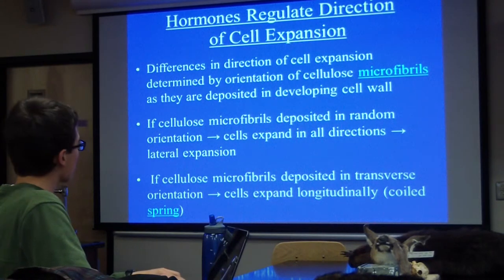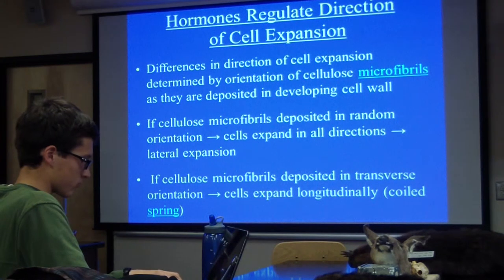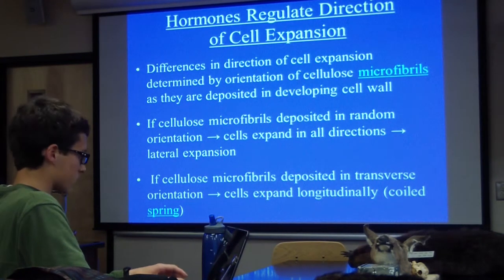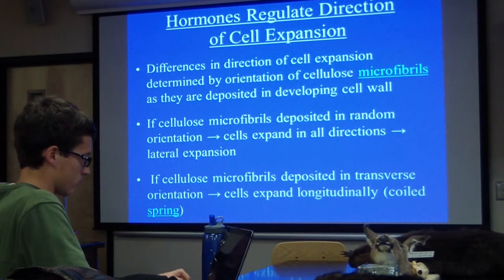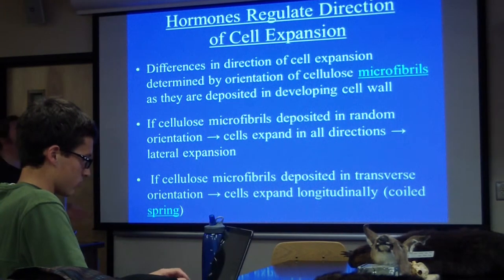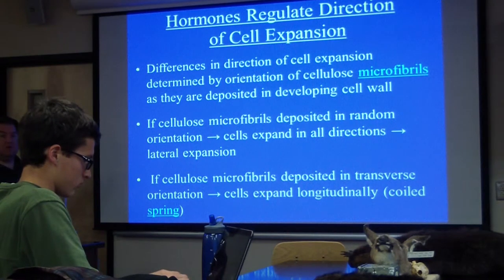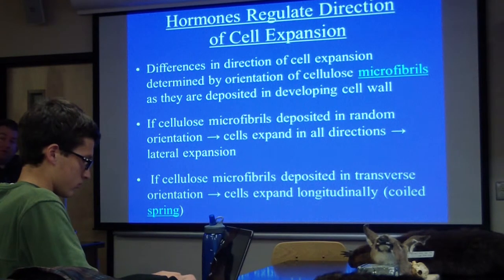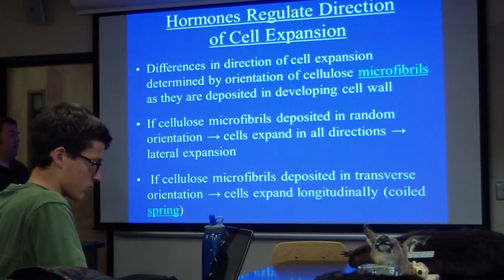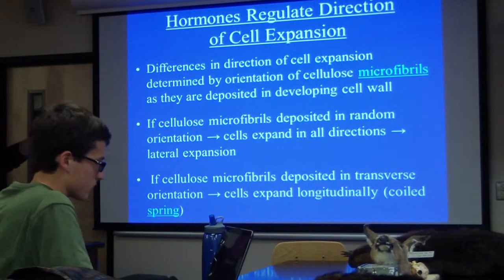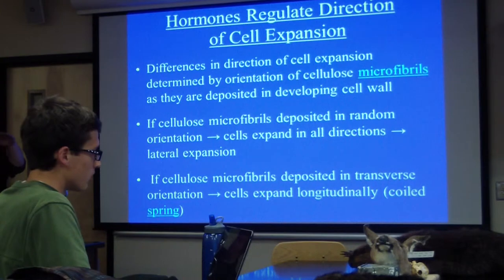Differences in the direction of cell expansion are determined by the orientation of cellulose microfibrils in the cell wall. The orientation of the cellulose microfibrils will influence the way that cell expands. If the cellulose microfibrils are deposited in a random orientation, the cells are going to expand in all directions, but the overall expansion will be lateral. If the cellulose microfibrils are deposited transversely — stacked like this — then the cell is going to expand longitudinally.